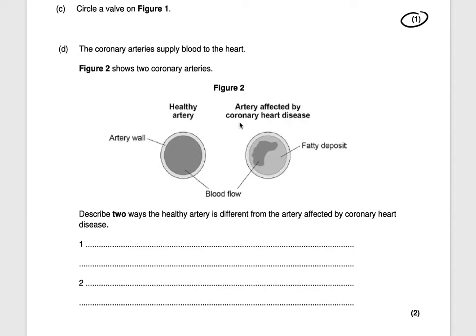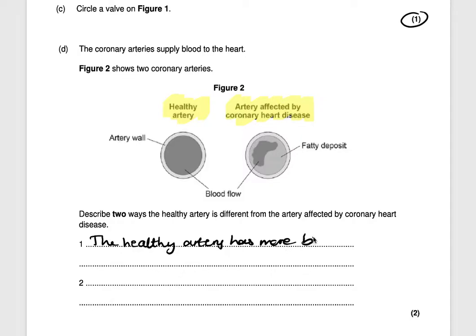The next question: the coronary arteries supply blood to the heart. Figure two shows two coronary arteries — describe two ways the healthy artery is different from the artery affected by coronary heart disease. The healthy artery has more blood flow. Another difference is that the blocked artery has more fatty deposits, which restricts the amount of blood flowing. So: more fatty deposits on the affected artery, and restricted blood flow — that gets you two marks.